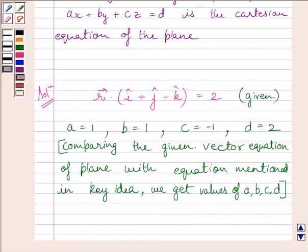Now, we can find Cartesian equation of the given plane by substituting values of A, B, C and D in this equation.